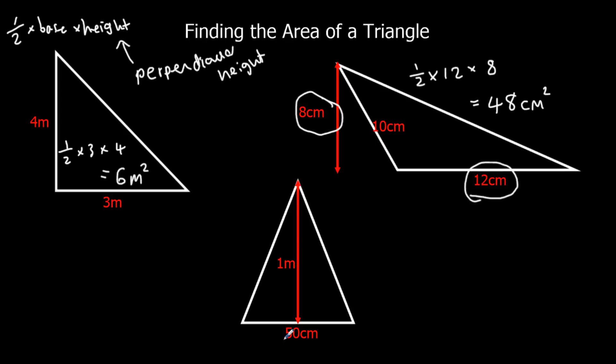We need to make the units the same before we do the question. Because we've either got to measure it in centimeter squares or we've got to measure it in meter squares. So if I wanted to measure it in centimeter squares, I'd change this to 100 centimeters. And then I'd do half times base, which is 50, times the height, which is 100.